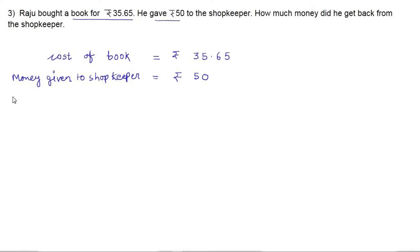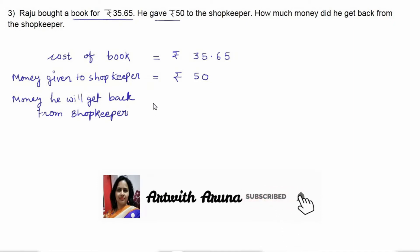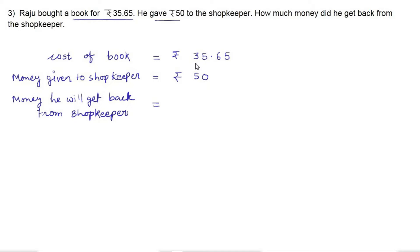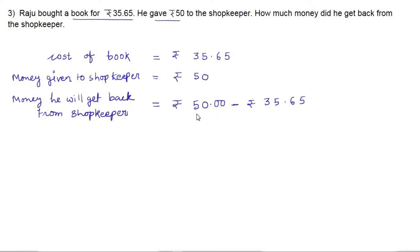Next, we need to calculate the money he will get back from the shopkeeper. That equals rupees 50 minus rupees 35.65. Here we don't have any decimal part in 50, but 35.65 has two digits after the decimal point. So first we need to convert 50 into a decimal number by adding two zeros, making it 50.00. Now both numbers have two digits after the decimal point.